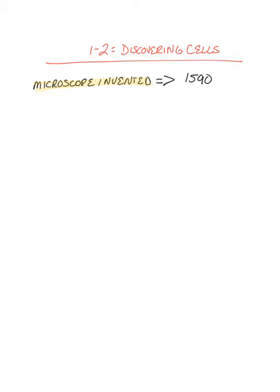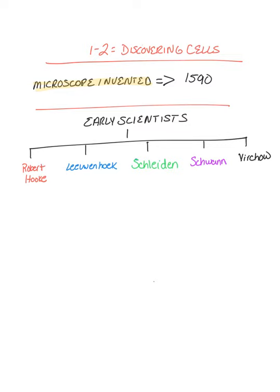The microscope allowed us to discover and learn about cells. There are five people we're going to discuss that were important in the discovering of cells: Robert Hooke, Leeuwenhoek, Schleiden, Schwann, and Virchow.